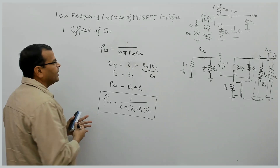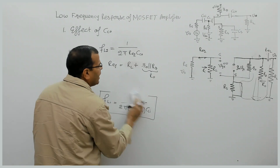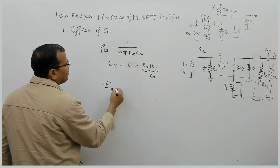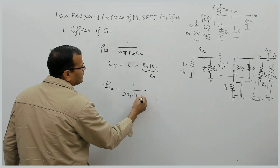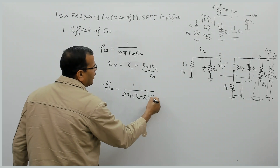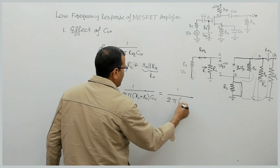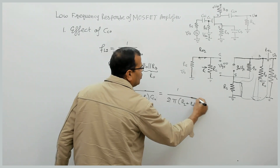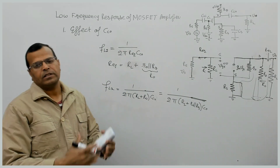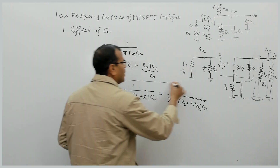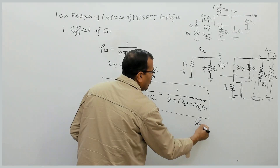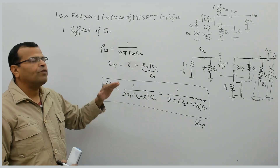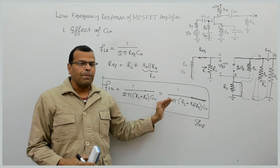You should remember this directly. The cutoff frequency due to the output coupling capacitor will be 1/(2π · (R_L + R_0 || R_D) · CC0), where R_0 || R_D is the output resistance of the amplifier. That is the second cutoff frequency — a simple expression worth remembering, as there can be numerical problems on this in the GATE exam or Engineering Services exam.